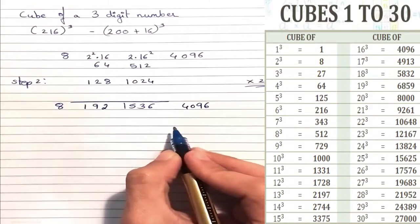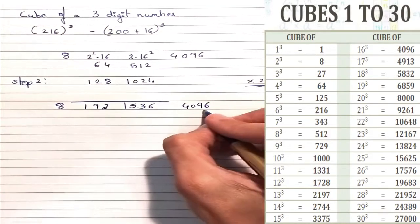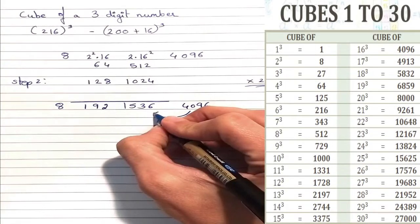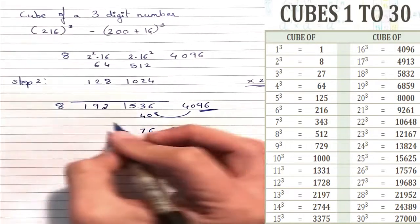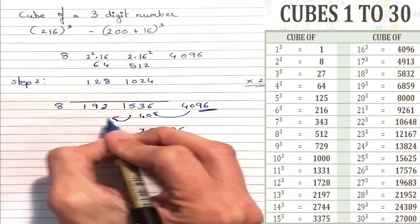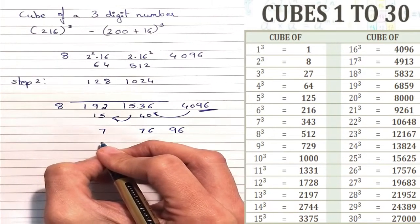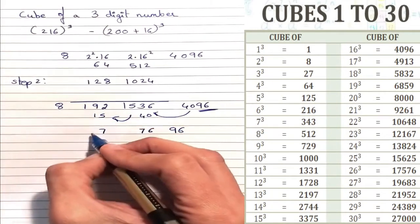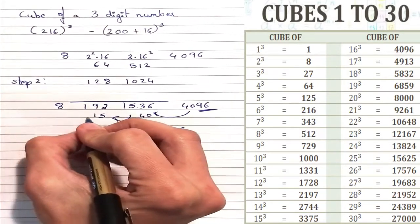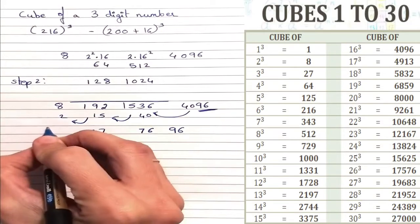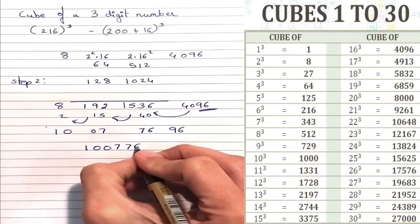Now since this is a 3-digit number, we retain 2 digits and carry over the rest. So we carry over 40 from 4096, giving 76, and 15 gets carried over. Adding 15 to 192: 5 + 2 = 7, 9 + 1 = 10, carry 1, giving 207, and 2 carries over to 8, making 10. So our answer is 10,077,696.